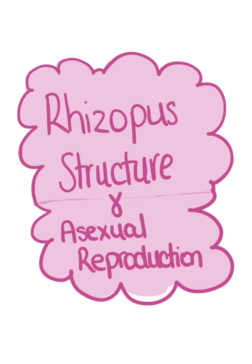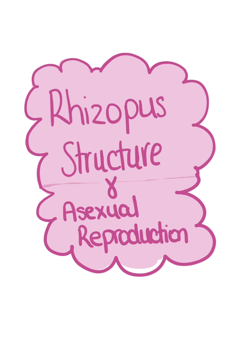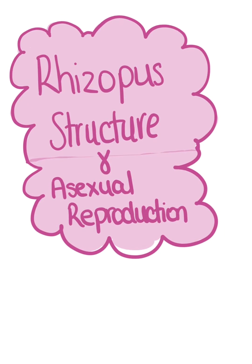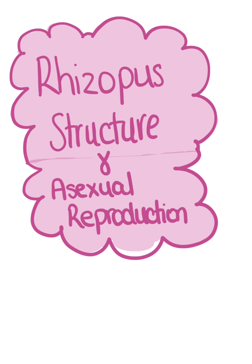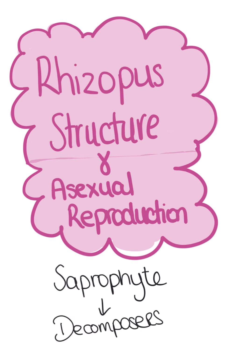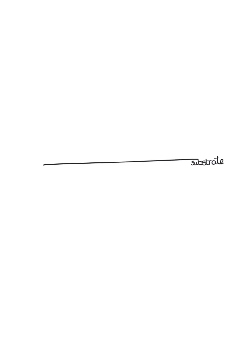This video looks at the structure of Rhizopus and how it asexually reproduces. Rhizopus is a saprophyte, meaning that it absorbs food from dead organic matter. Saprophytic fungi act as decomposers.